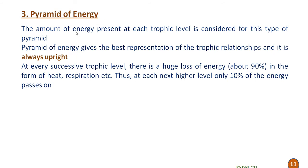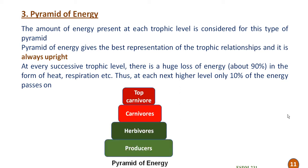The pyramid of energy represents the amount of energy present at each trophic level, and gives the best representation of trophic relationships — it is always upright. At every successive trophic level there is a loss of about 90% of energy as heat, respiration, etc., and only 10% of the energy is passed on to the next level. That is why the pyramid of energy is always upright.